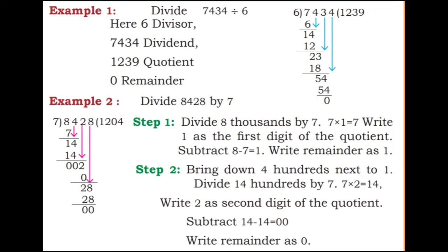Example 1: divide 7,434 by 6. 6 ones are 6; 7 minus 6 is 1. Bring down 4, making 14. 6 twos are 12; 14 minus 12 is 2. Bring down 3, making 23. 6 threes are 18; 23 minus 18 is 5. Bring down 4, making 54. 6 nines are 54; 54 minus 54 is 0. So 6 is the divisor, 7,434 is the dividend, 1,234 is the quotient, and 0 is the remainder.